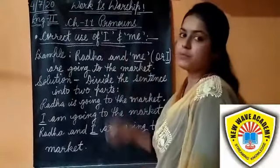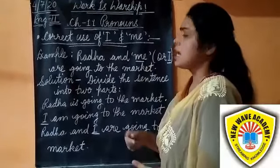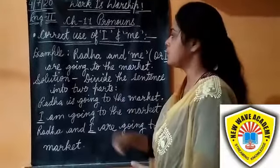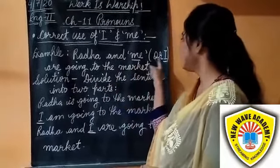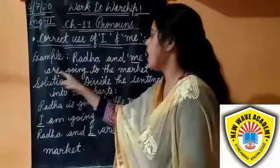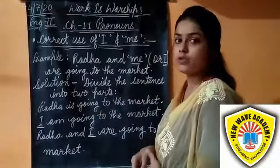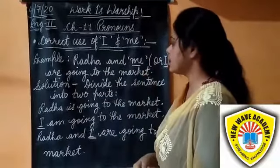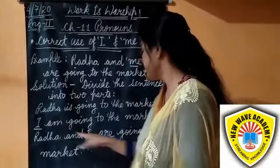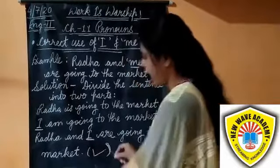Correct use of I and me: sometimes we are not clear whether to use I or me in a sentence. For example: 'Radha and (me/I) are going to the market.' Divide the sentence into two parts — 'Radha is going to the market' and 'I am going to the market.' So the correct sentence is: 'Radha and I are going to the market.'